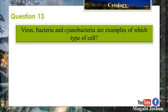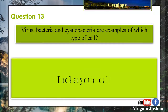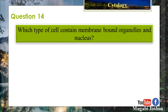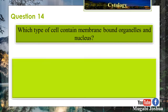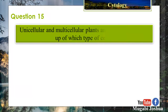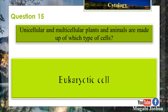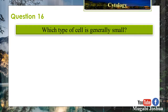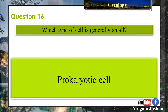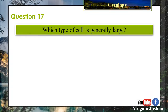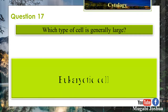Question 13: Viruses, bacteria, and cyanobacteria are examples of which type of cell? Prokaryotic cell. Question 14: Which type of cell contains membrane-bound organelles and a nucleus? Eukaryotic cell. Question 15: Unicellular and multicellular plants and animals are made up of which type of cells? Eukaryotic cells. Question 16: Which type of cell is generally small? Prokaryotic cell.